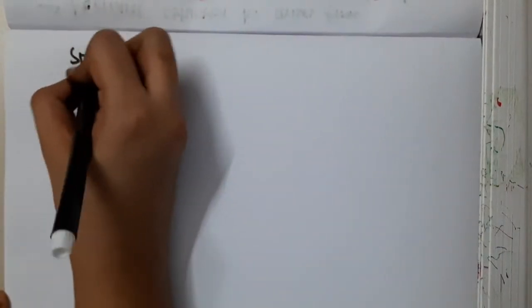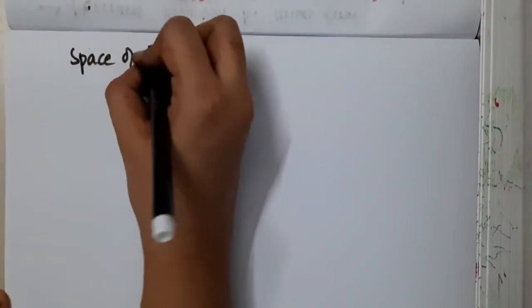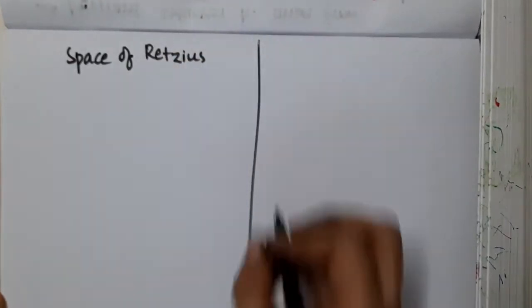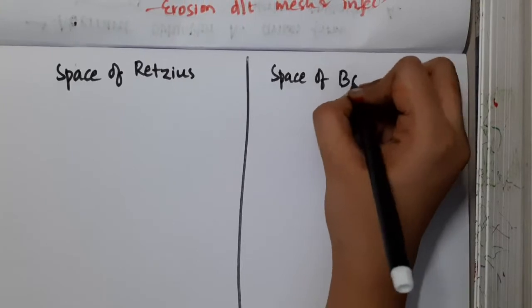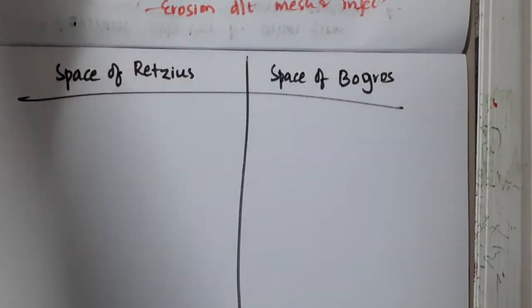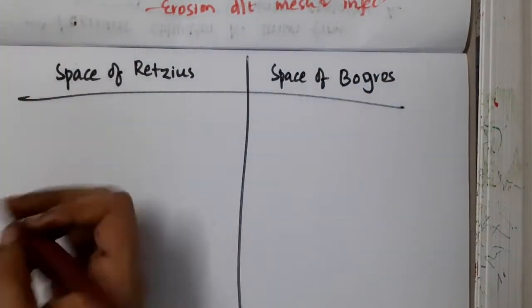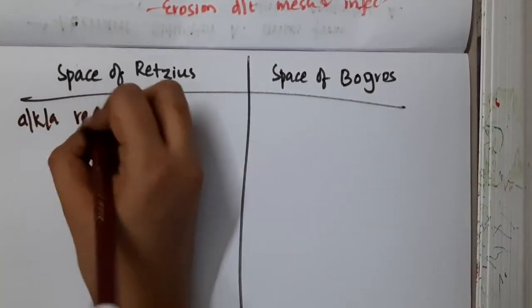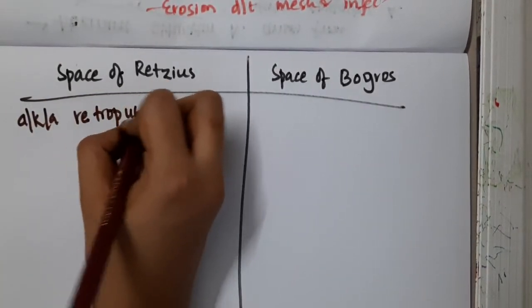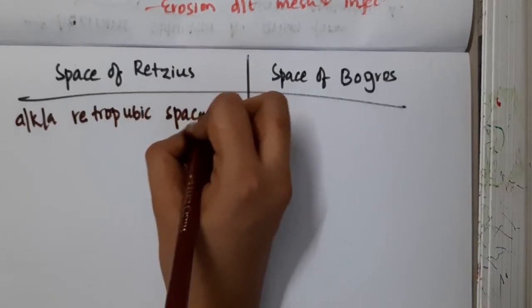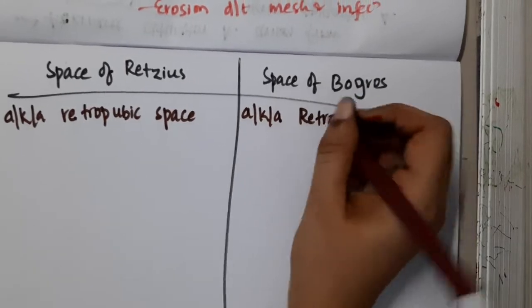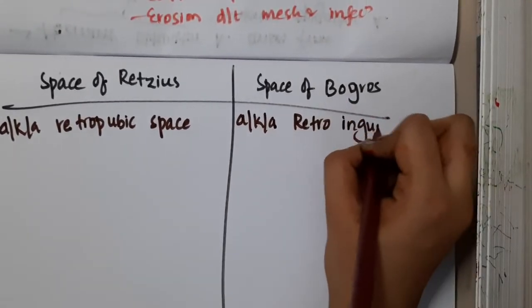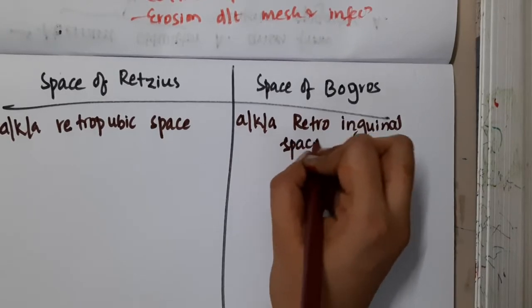Hello friends, let us now learn about two spaces: the space of Redzius and the space of Bogros. The space of Redzius is also called the retro-pubic space, while the space of Bogros is also called the retro-inguinal space.